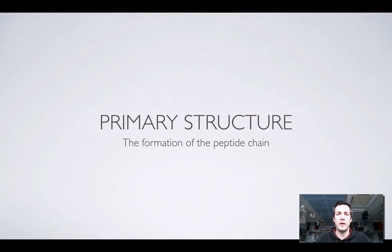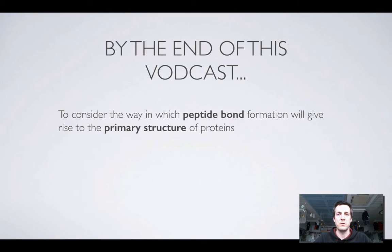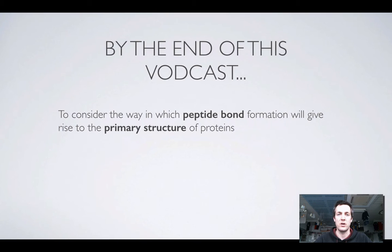Hello and welcome to this film which is all about the primary structure of proteins. Hopefully you've watched the film that covers the primary, secondary and tertiary structure of proteins in a little bit of detail. Here we're going to look at what we mean by primary structure in a little bit more detail and how it happens. We're going to consider the way in which peptide bond formation will give rise to the primary structure of proteins, which we can think of in simple terms as being the order in which amino acids are joined together in the chain.